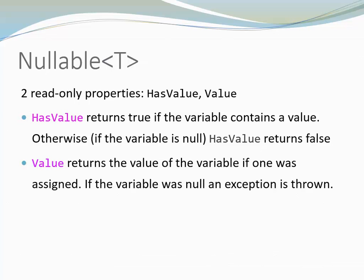The Value property returns the value of the variable provided one was assigned. If the variable was null an exception is thrown. The struct nullable also has a method called GetValueOrDefault. This method returns the value or a default value in case the variable was null.